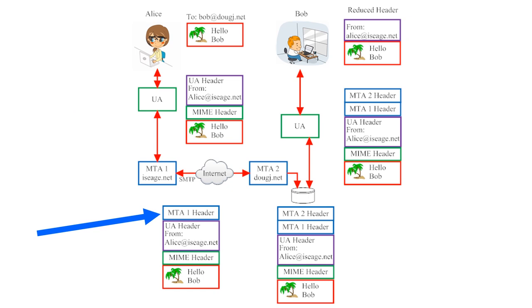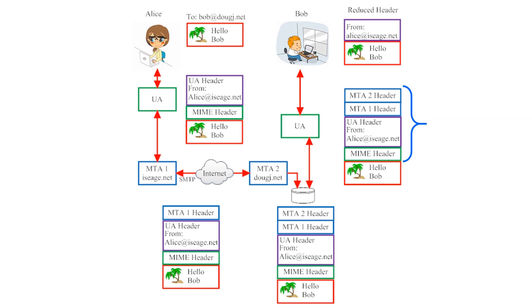When the message goes to the first message transfer agent, that MTA leaves a header of its own so there's a record of where the email has been. All subsequent MTAs will leave headers of their own as well. In this illustration there are only two MTAs, so the email only picks up two MTA headers. The email arrives at Bob's user agent with all of these headers attached. In many cases, the headers will end up being much longer than the email message itself. To reduce clutter, most modern user agents won't display all of these headers by default. In Bob's case, he can only see the message and a reduced header that tells him who sent it. However, user agents will allow you to see the full header if you ask for it.